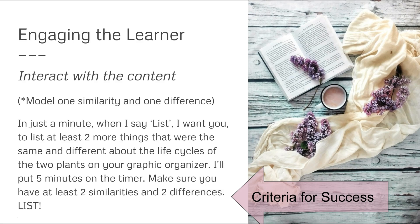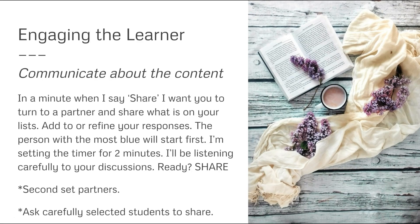Let's go back to our science objective. We want to get the students thinking, so we'll ask them to start listing similarities and differences that they notice from their illustrations recorded in their science notebook. Model at least one similarity and one difference. Be clear about what the criteria is for completing this portion of the task. Pause a minute to read this scenario and pay careful attention to the success criteria. The criteria for success at this time is to have at least two similarities and two differences. Later in the task, we can add additional criteria as the level of thinking evolves.